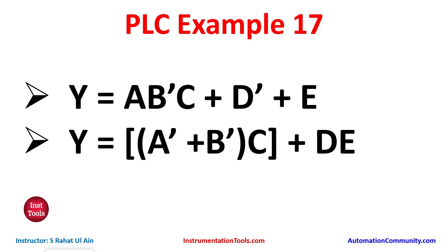We will start with the first one: Y = AB'C + D' + E. In this case, we will use normally open contacts for inputs A, C, and E, and we will use normally closed contacts for inputs B and D. Firstly, we will connect A, B' and C in series, thus implementing an AND gate.